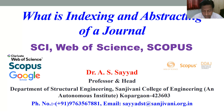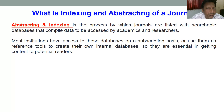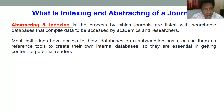Today in this video I am going to tell you what these indexing systems are and what indexing and abstracting of a journal means. Indexing and abstracting is simply a process by which any journal is listed in a searchable database. There are many agencies that create these databases, such as Scopus and Clarivate. Abstracting and indexing is the process by which journals are listed in these databases, which are accessible to academics as well as researchers.